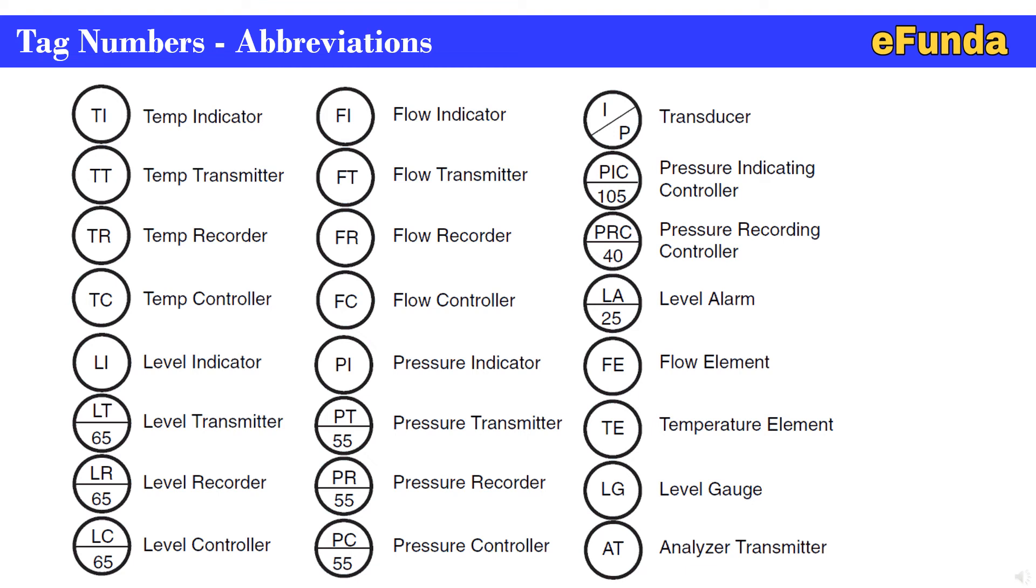Similarly, there is a flow loop and then the pressure indicators. PI is pressure indicator, PT is pressure transmitter, PR is pressure recorder, PC is pressure controller.